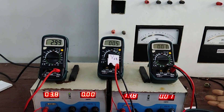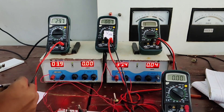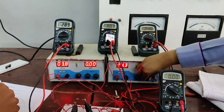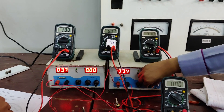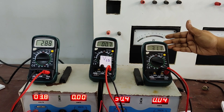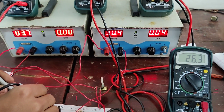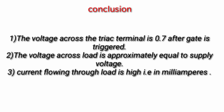There is no change as we go to 30 volts maximum. The voltage across the TRIAC terminal remains 0.7 volts — the triggered voltage — with a current of 31.1 milliamperes through the load, and the load voltage is 30 volts. The conclusion from this practical: after the gate is triggered, the voltage across the TRIAC terminal is 0.7 volts, the voltage across the load is approximately equal to the supply voltage, and the current flowing through the load is in milliamperes.